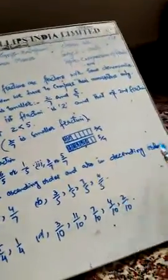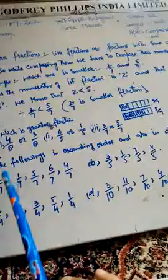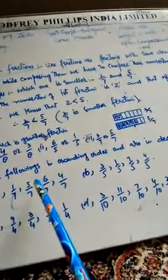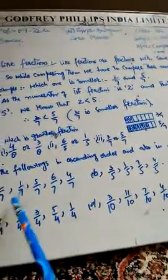In question number three, write the following fractions in ascending order and also in descending order. Part a: 2/7, 1/7, 5/7, 6/7, and 4/7. All of these are like fractions with the same denominator seven, so compare the numerators to arrange them from smallest to greatest and then greatest to smallest.